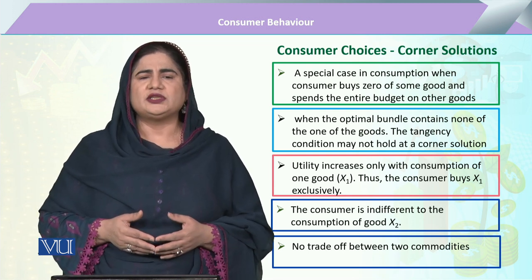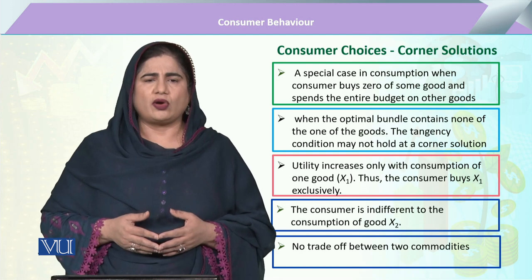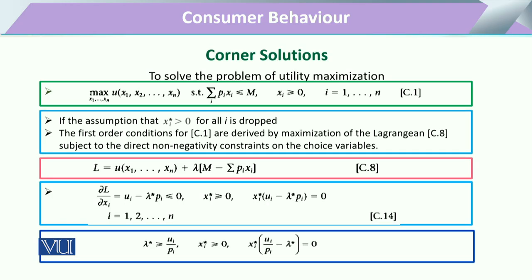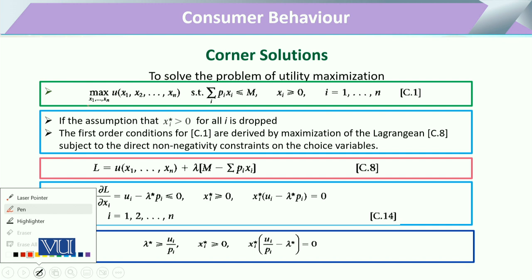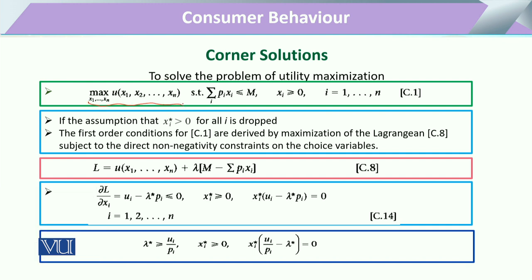Keeping in view this special condition, we call this a corner solution. The consumer has to maximize his utility, and for utility maximization he uses an equation for commodity one and various other commodities, subject to the condition that he spends his whole budget M — his income — which is either equal to all expenditure or might be somewhat in excess of that expenditure.